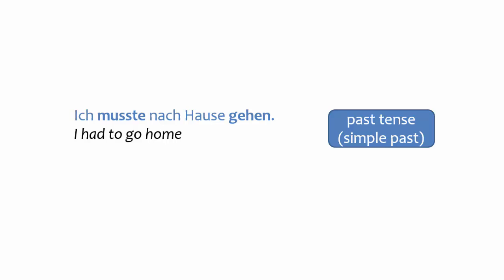You may recall that German verbs have two past tense forms: simple past and present perfect, also known as compound past. It's important to remember that modal verbs are typically conjugated in the simple past, rather than the compound past. There is a compound past tense form for modal verbs, but it is rarely used.